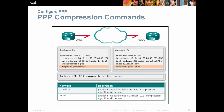If we want compression, we add the 'compress' command. There are several compression types: predictor or stac. Different compression algorithms suit different traffic types — like MP3 for music or zip for data. Predictor and stac are two different ones; they both work, but you'll find in different usages that some compress at a higher ratio and use less CPU. Research these two algorithms and see which works best for your traffic mix on that link.